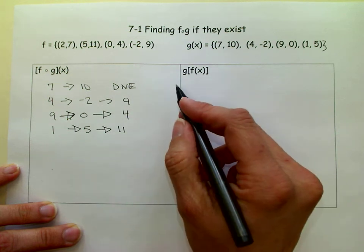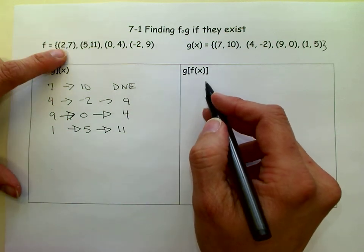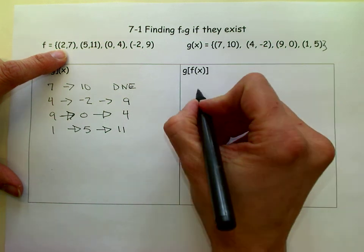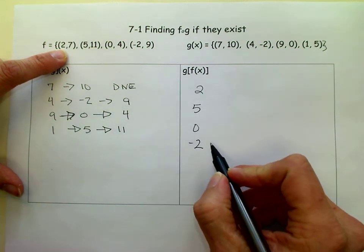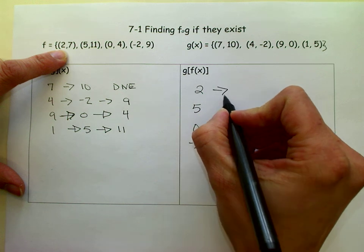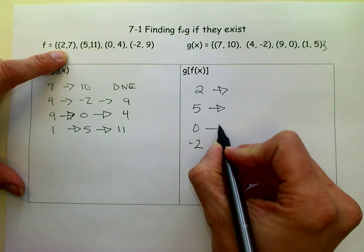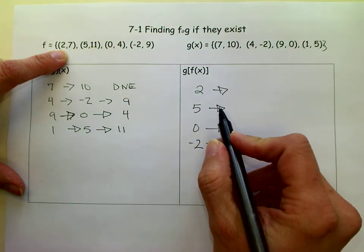So over here, we're going to go backwards now. I'm going to start with f and go to g. So some people like to just write down all the numbers, all the x's in that f of x, and then we will see if it exists over here.